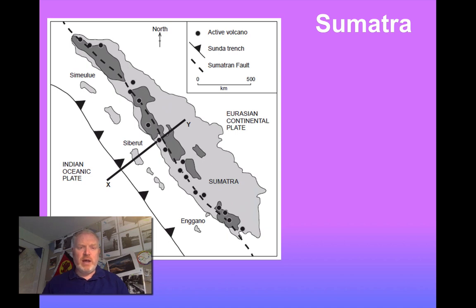We can see that we have two plates here. We've got the Indian and the Eurasian plates coming together. Indian plate is oceanic, Eurasian plate is continental.